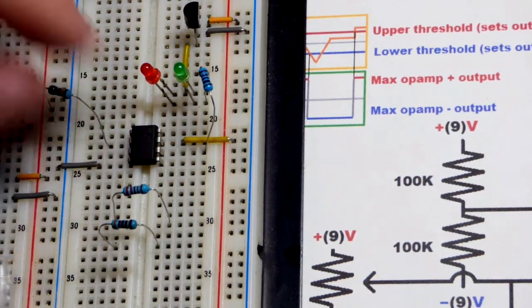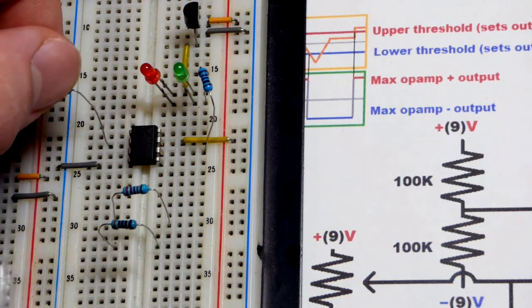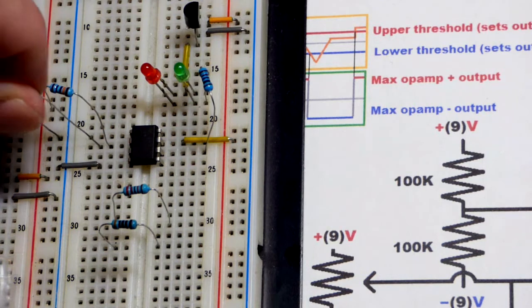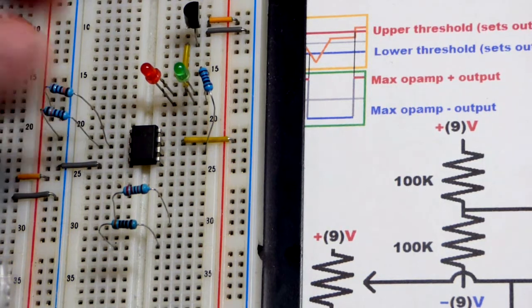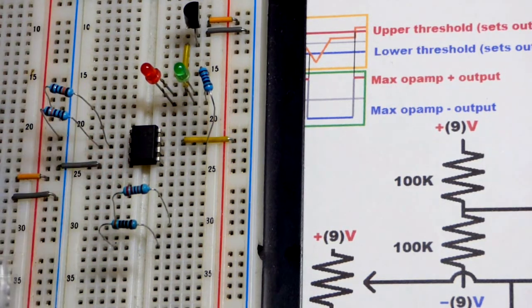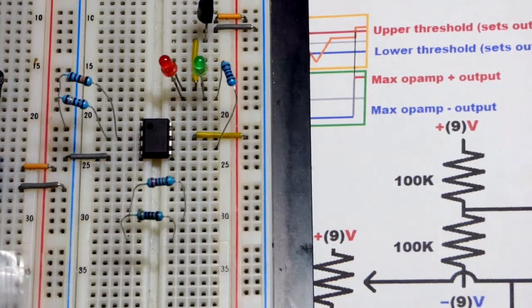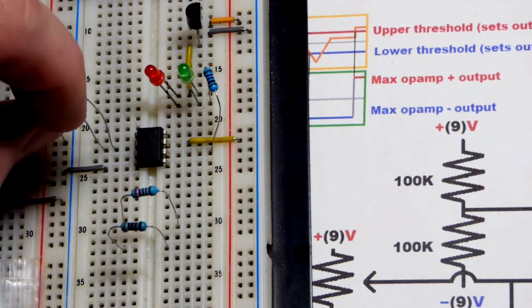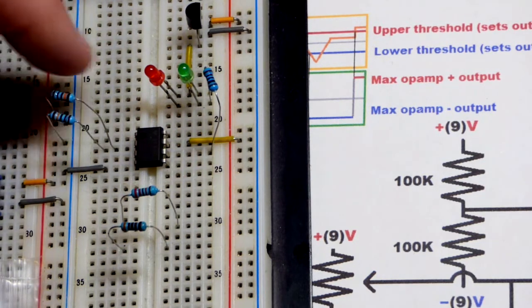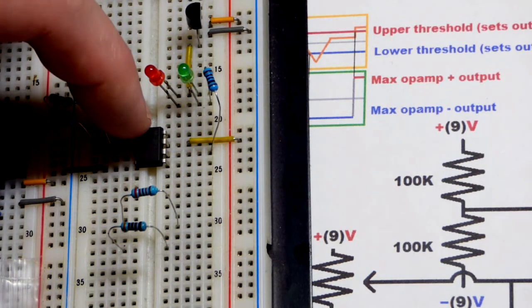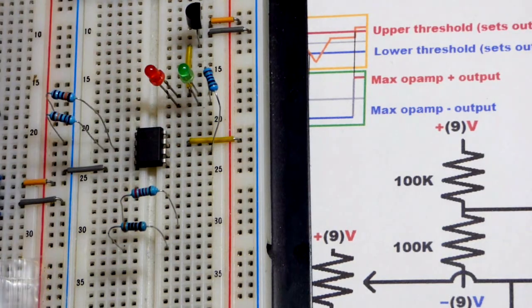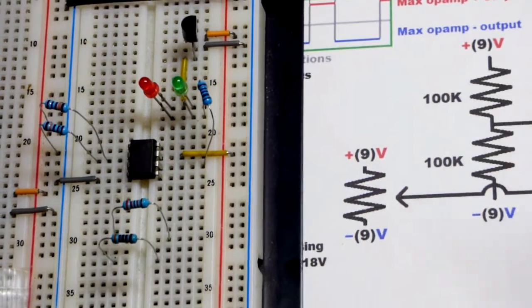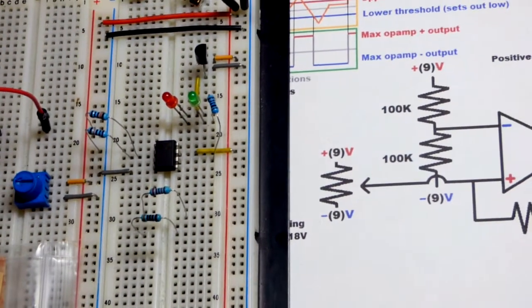I'm going to take 100 kiloohm resistors. You can use high value resistors here because the input just looks at voltage, not current. A little current might slip in, but it's an insignificant amount.